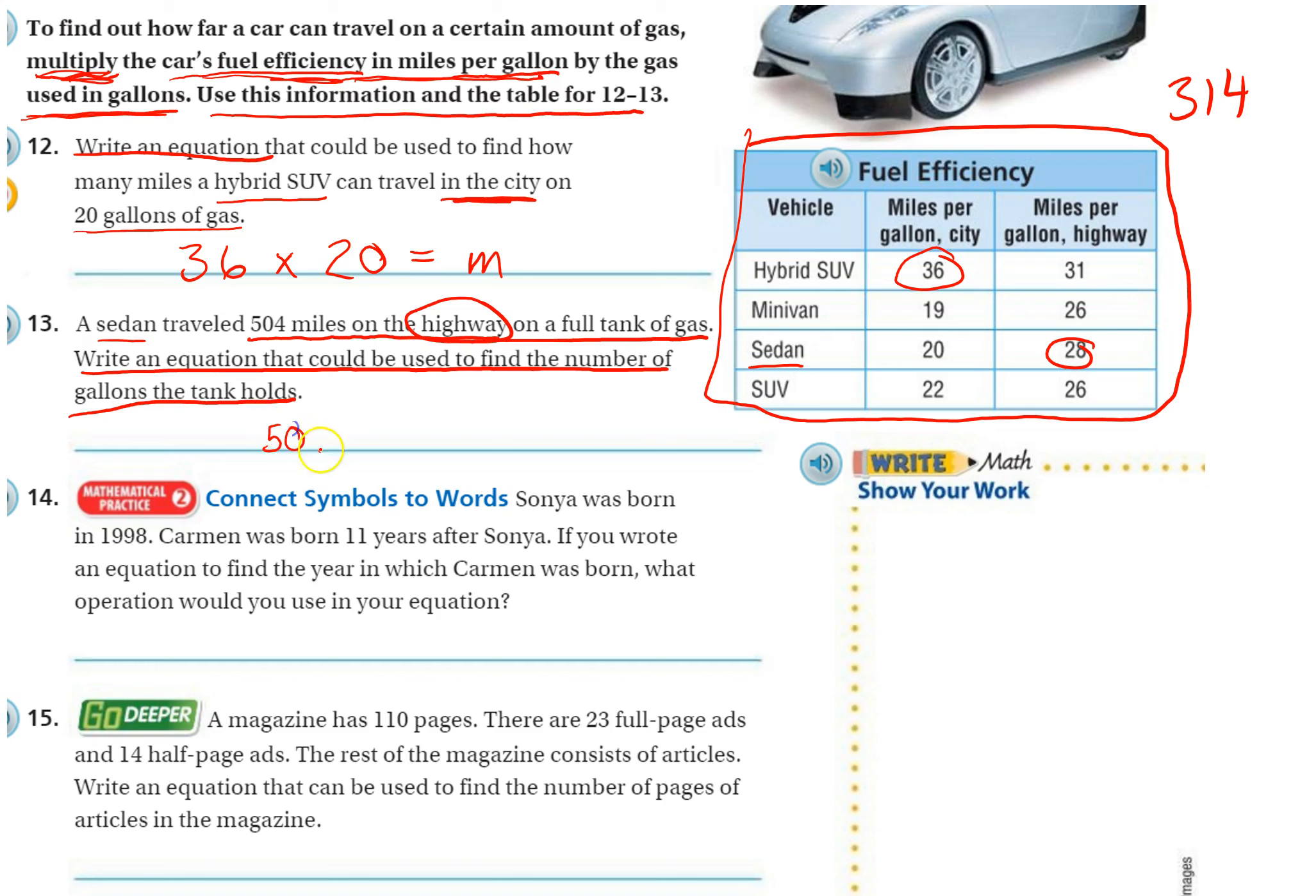So 504 is equal to however many miles per gallon they get, 28 in this case, times how much a full tank of gas is. That's what we don't know. So that's going to be our variable. We'll use G for gas. So there's our equation. Now we could use that to solve out, to figure out how many gallons of gas the sedan has, but they haven't asked us to do that.